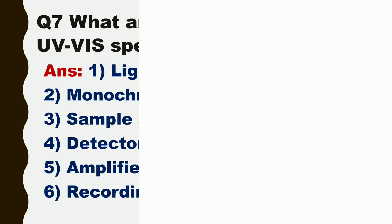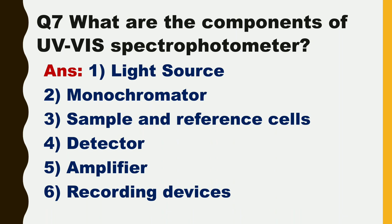Next question is: what are the components of UV visible spectrophotometer? The components of UV visible spectrophotometer are: number one, light source; number two, monochromator; number three, sample and reference cells; number four, detector; number five, amplifier; and number six, recording devices.